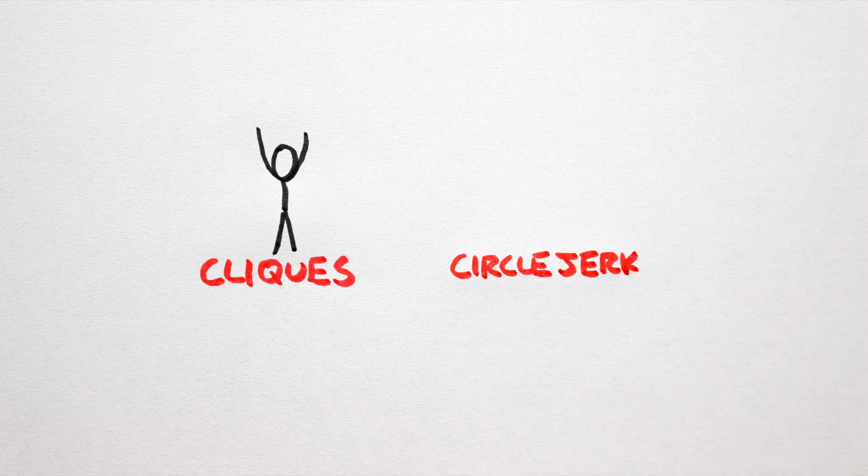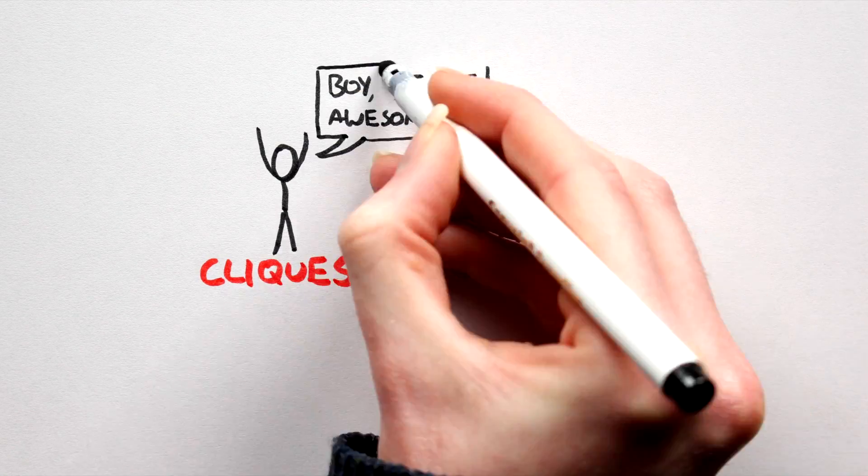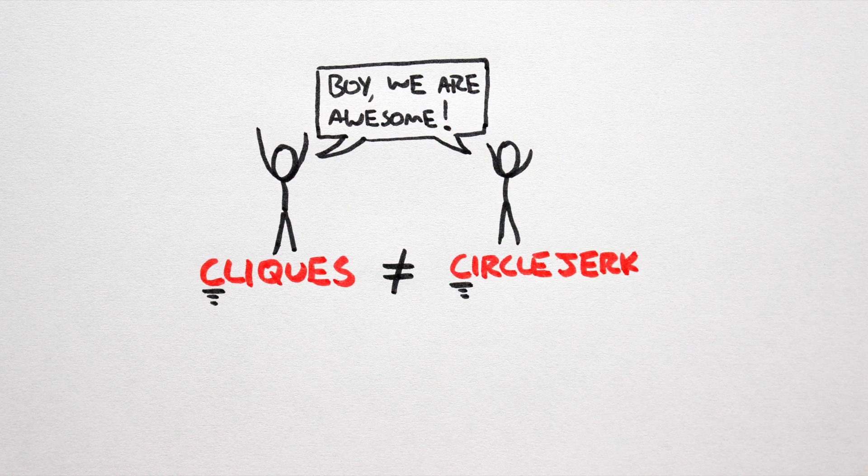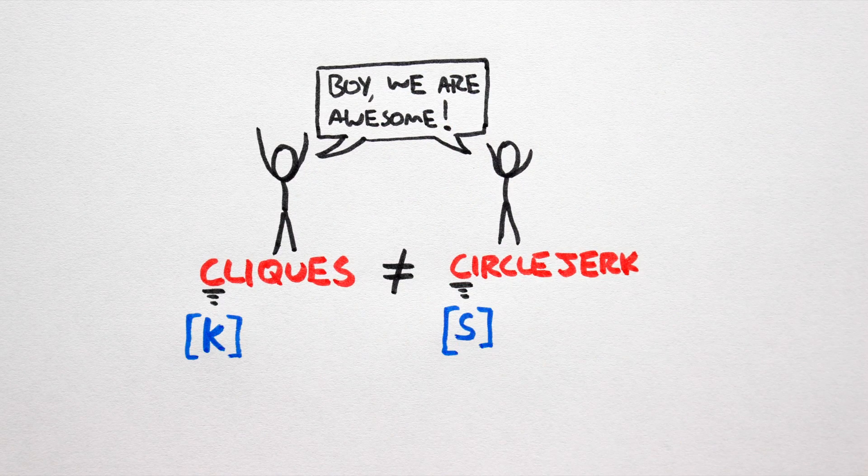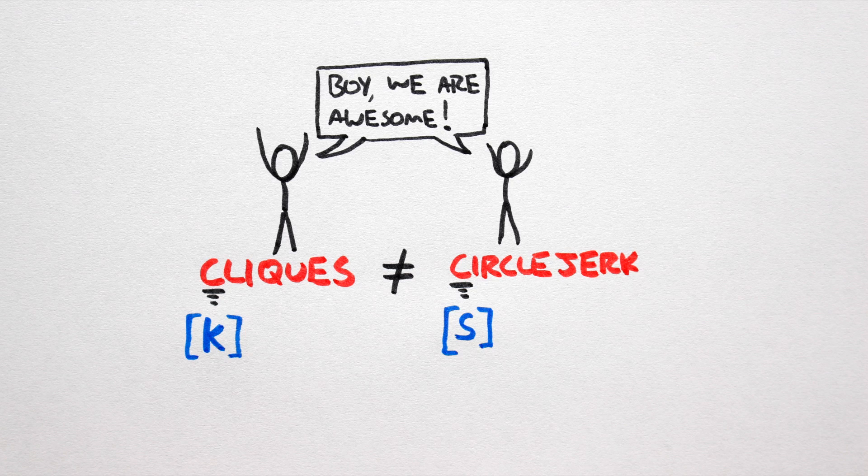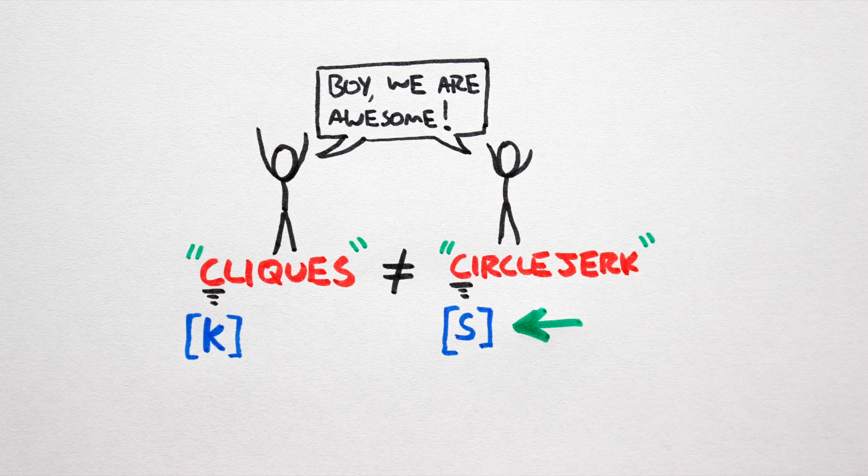People in clicks tend to circle jerk. The English letters C as in click and C as in circle jerk represent two totally different sounds. In IPA we have a separate symbol for each of these sounds. Throughout these videos I'll put the English words and the English representation of certain sounds in quotes, and the IPA symbols in square brackets.